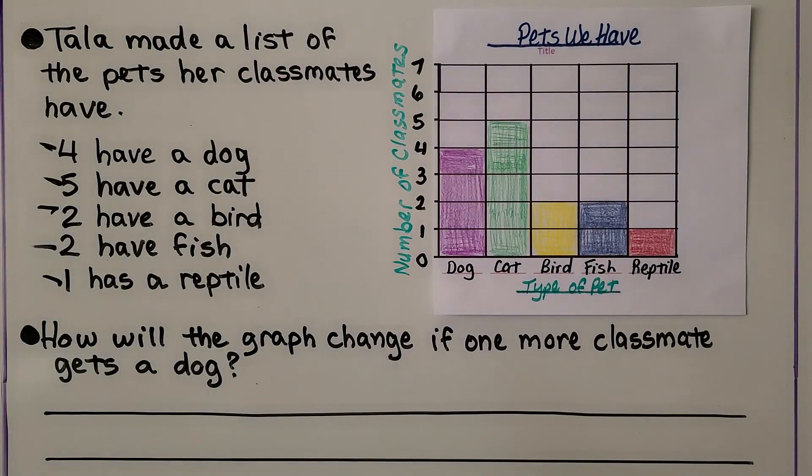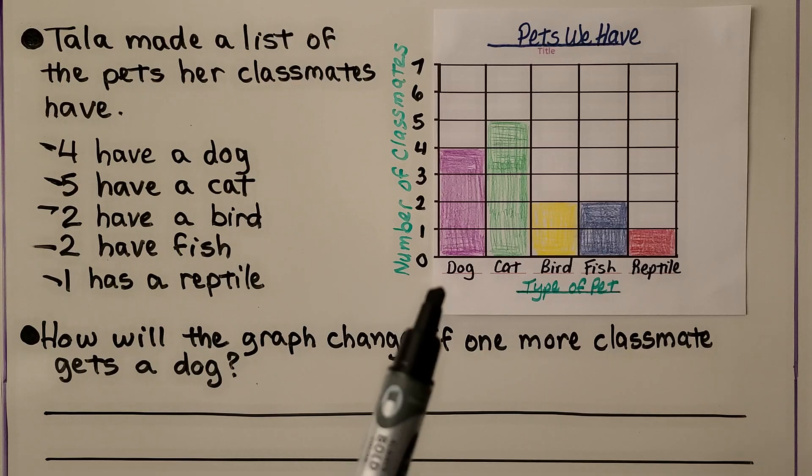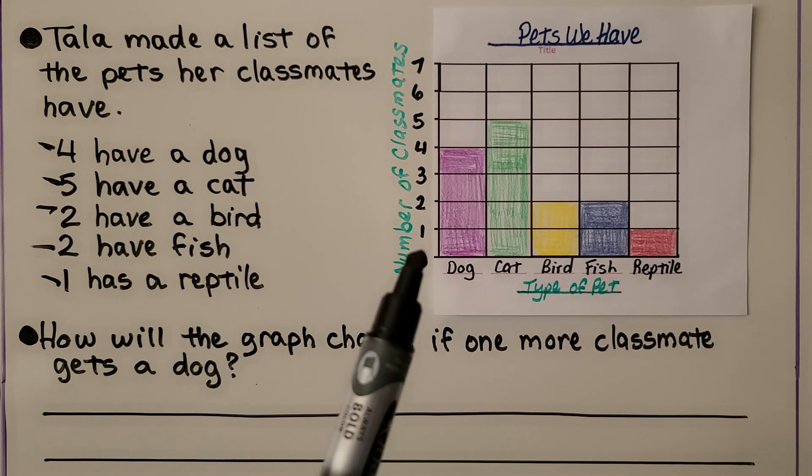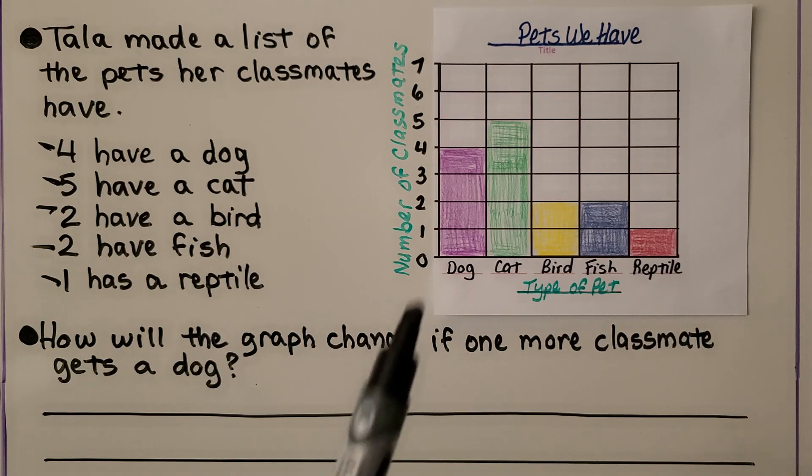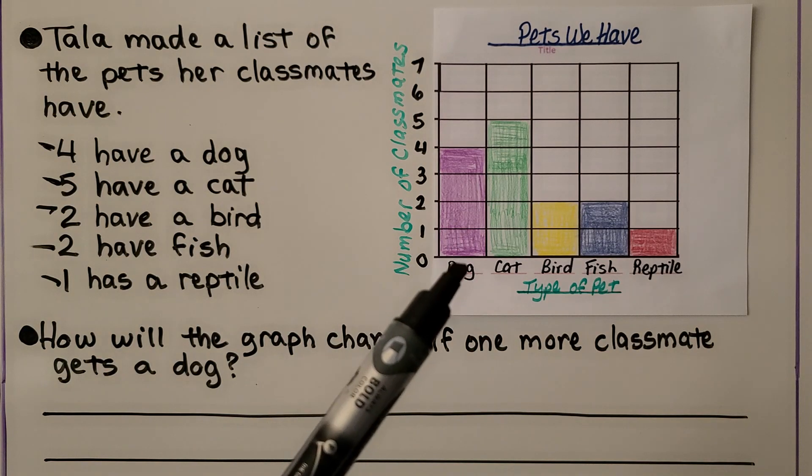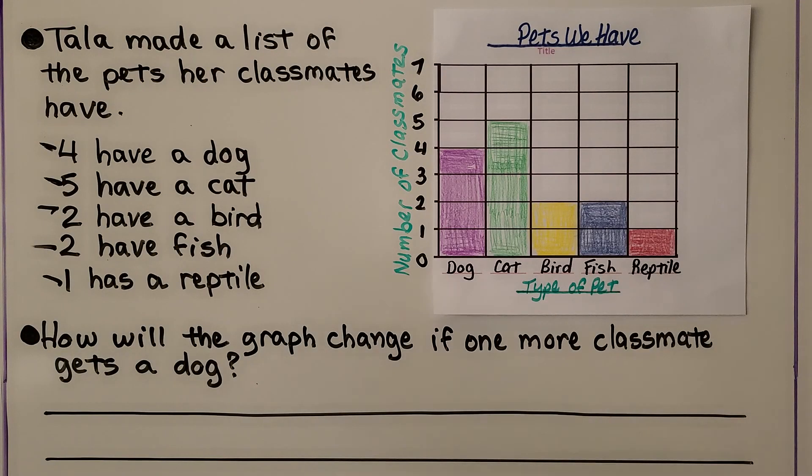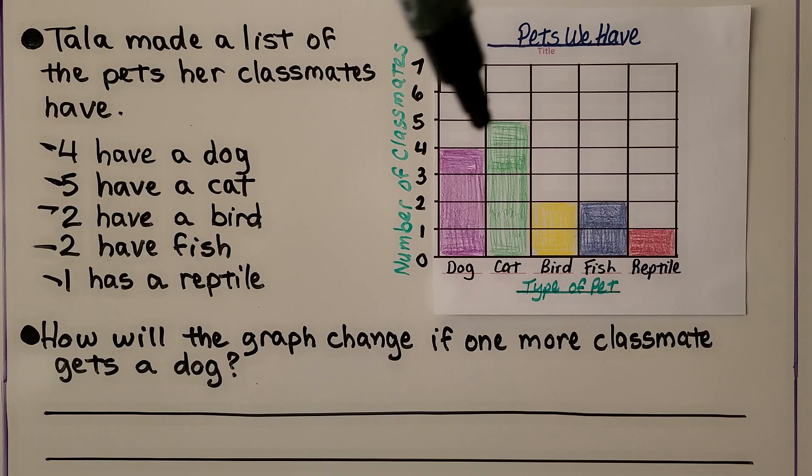We can answer the question, how will the graph change if one more classmate gets a dog? Look at this graph. What happens if one more classmate gets a dog? The dog bar will go up one more, and it will be the same height as the cat bar.